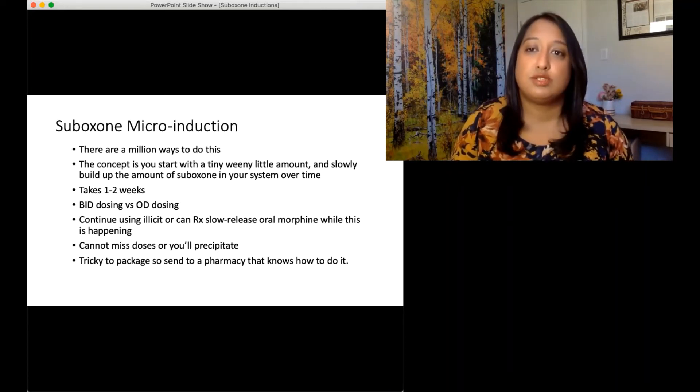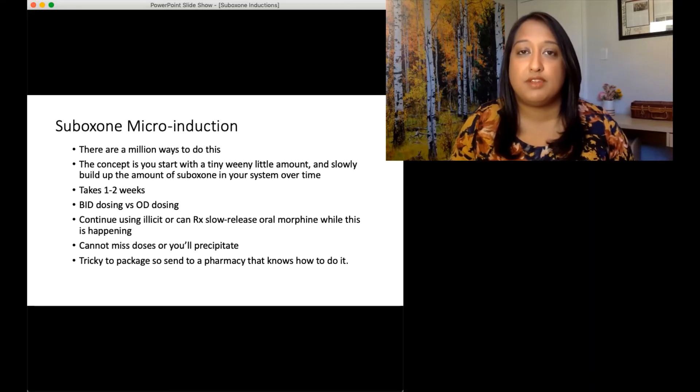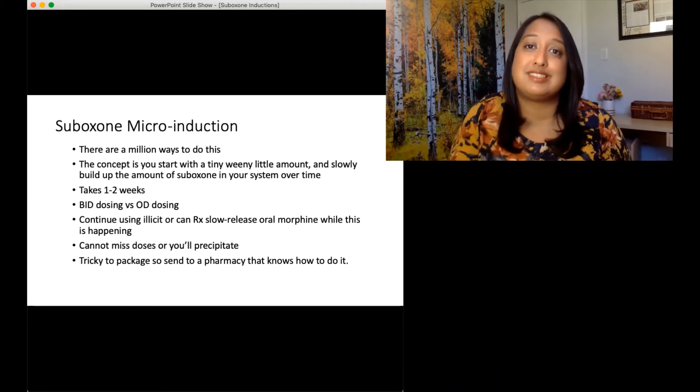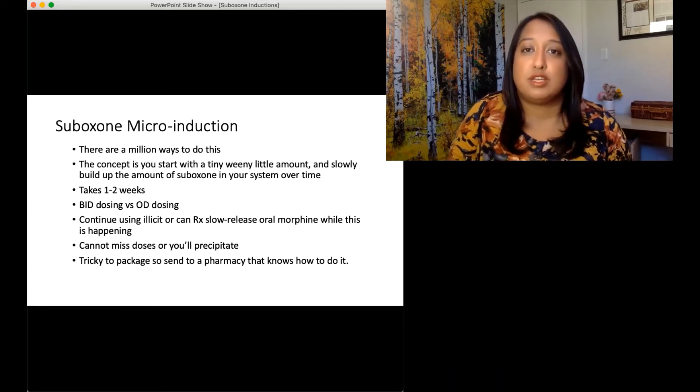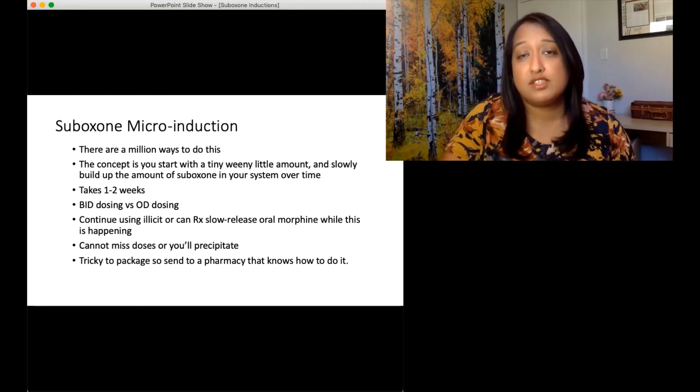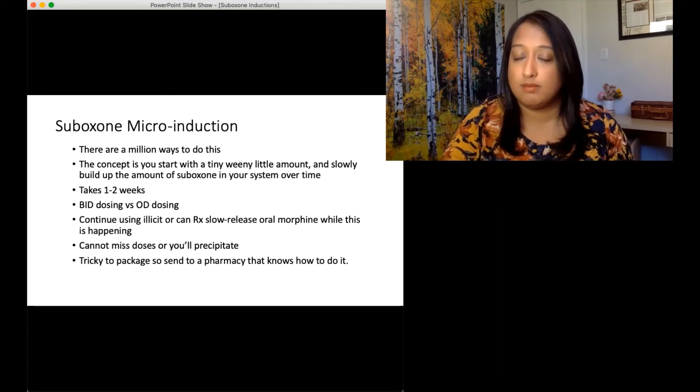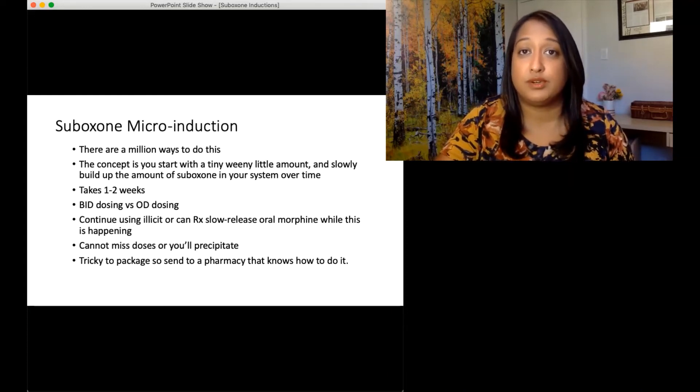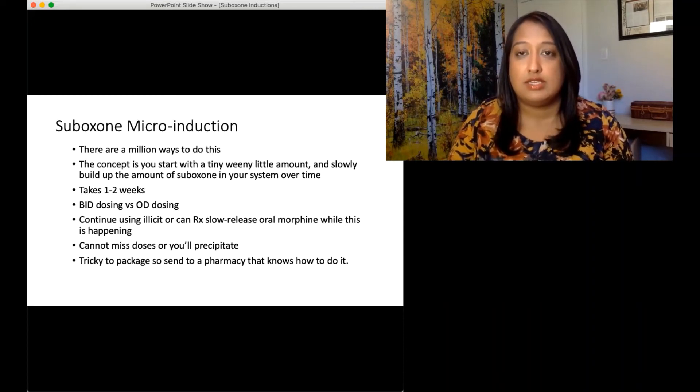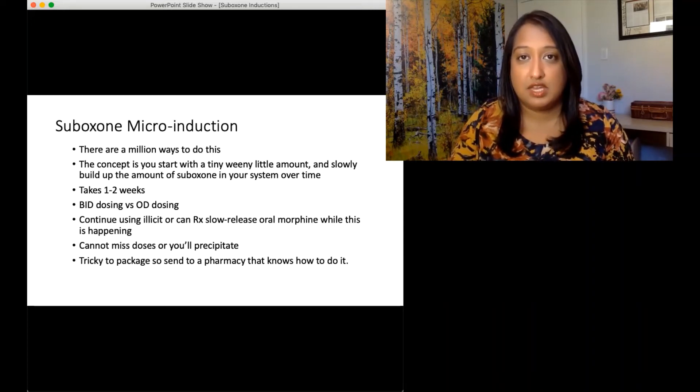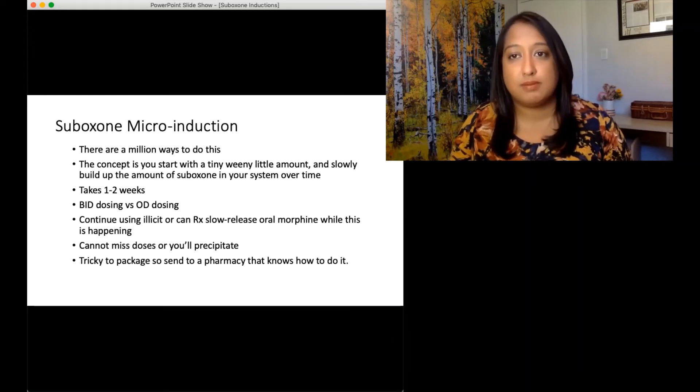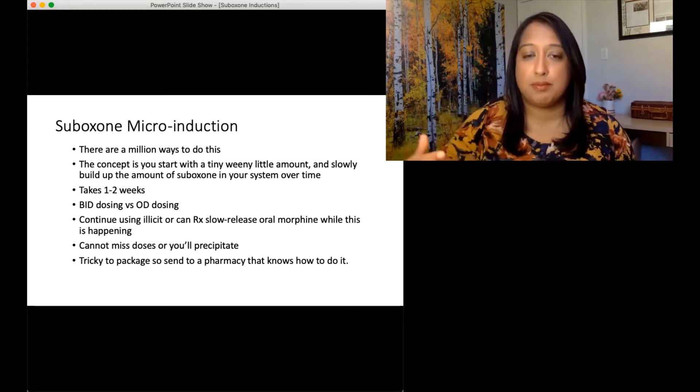Patients would continue to use their illicit opioids or if they're in hospital or acute care, whatever opioids they have prescribed during this time. So they stay on their other opioids to treat their opioid withdrawal. If they have stopped using illicit opioids but they still cannot manage the withdrawal, you can also prescribe slow release oral morphine or Kadian at the same time concurrently just to help manage that withdrawal. And then that Kadian stops near the end of the micro induction, you wrap up the Suboxone dose.